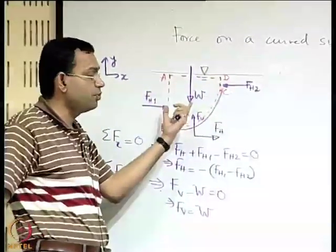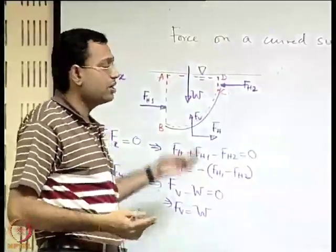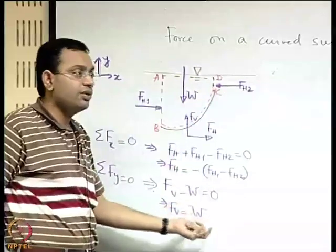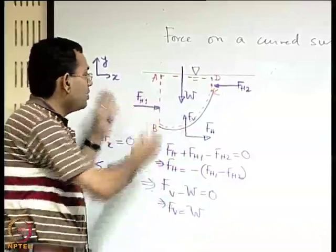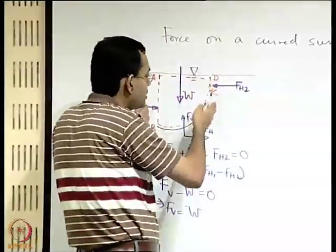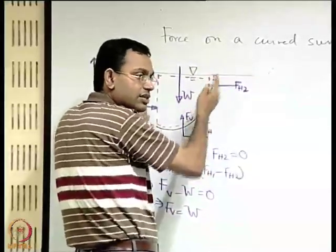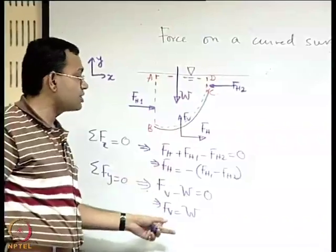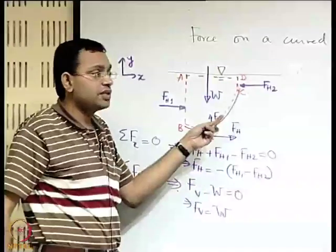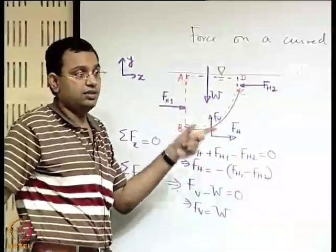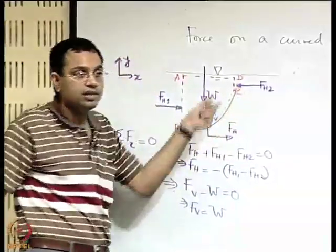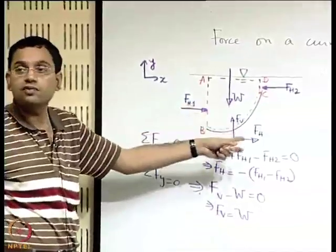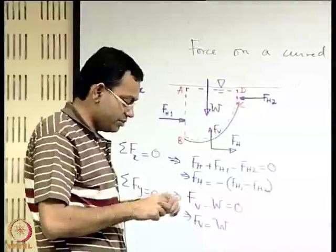The vertical component of force equals the weight of fluid contained within the extended volume up to the free surface. Calculating that weight is equivalent to calculating the volume and multiplying by fluid density and g. By Newton's third law, −FH and −FV are the forces exerted by the fluid on the curved surface.